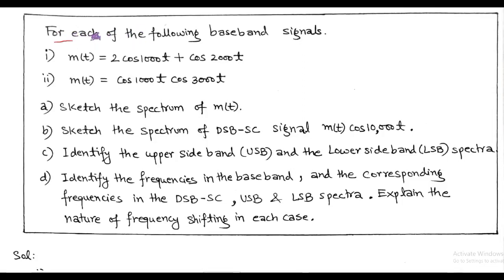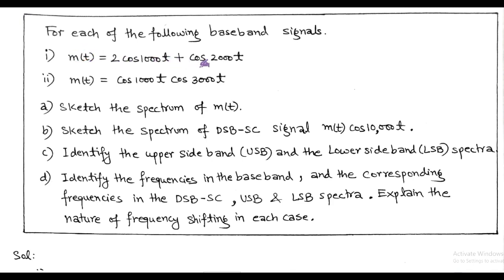The question is: for each of the following baseband signals — MT equals 2cos(1000t) plus cos(2000t), and second, MT equals cos(1000t) times cos(3000t) — we have to determine several things.